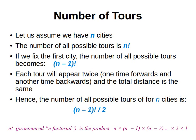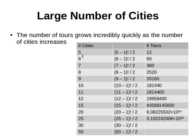The number of cities grows gradually, but the number of tours grows extremely fast — this is called exponential growth. Cities increase by one, but the increase in the number of tours is huge between each step. If you look at the jump between 15 and 20 cities, the difference in the number of tours is just too significant.